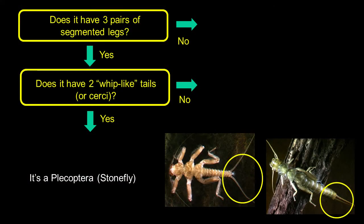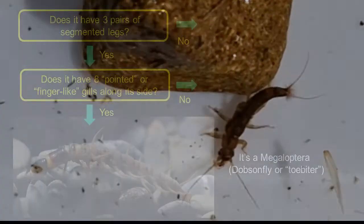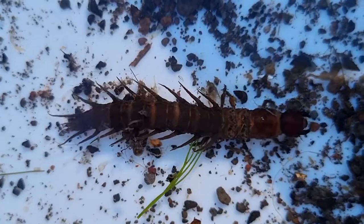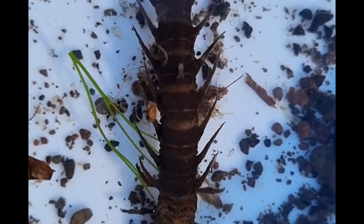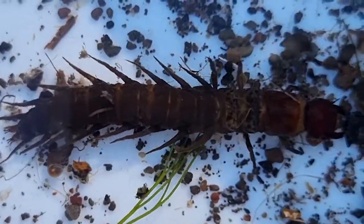The next order also depends on having three segmented legs — the next question is: does it have two whip-like tails? If it does, then you've got probably a stonefly, a Plecoptera. Another order which also has three pairs of legs is the toe biters, Megaloptera, and the way in which they differ is they have these eight finger-like gills along the side of their abdomen. Superficially, if you're not looking under a microscope, you might think those are legs — but they're not, they're actually gills.